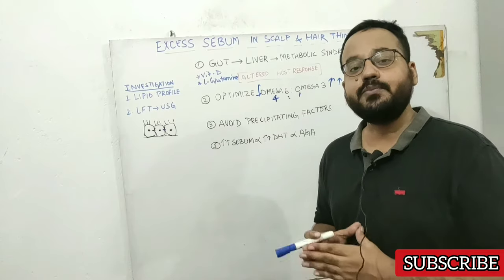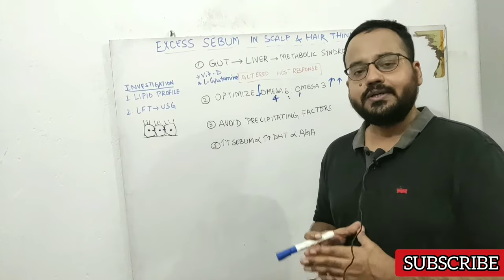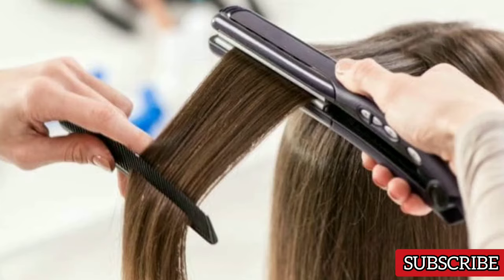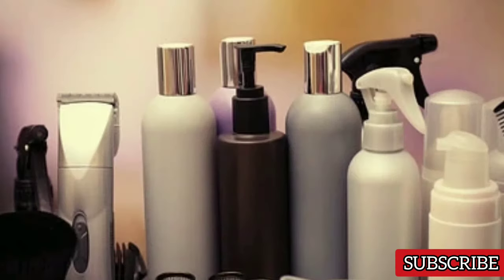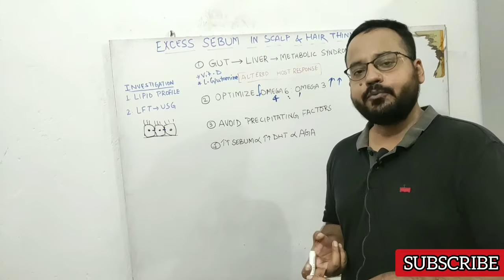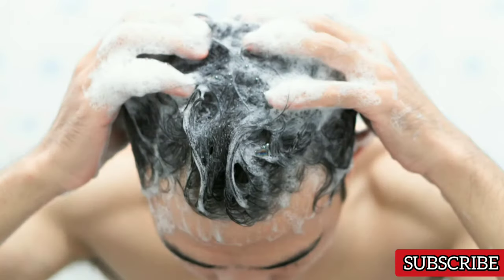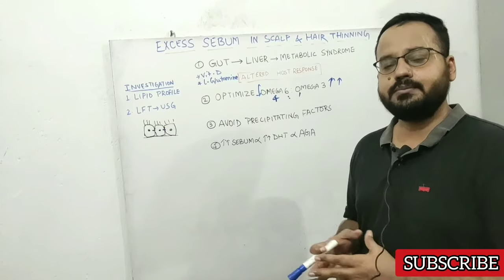The third thing is avoiding precipitating factors: direct application of heat, harsh chemicals in hair products or shampoos, and over-shampooing. Avoid these things as they can stimulate your sebaceous glands to produce more sebum.